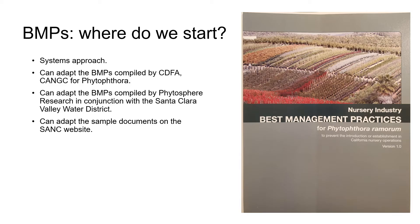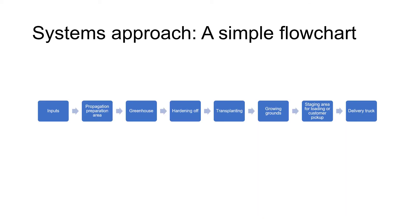There's also another set of BMPs for nurseries for Phytophthora ramorum on the website of Phytophthora Research, and sample documentation on the SANC website — SANC stands for Systems Approach to Nursery Certification. Putting together a comprehensive set of BMPs typically involves a systems approach. This holistic process involves breaking down our whole production line into individual components or stages and then identifying and evaluating the risk potential at each critical stage.